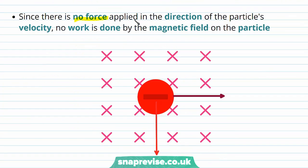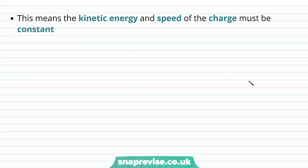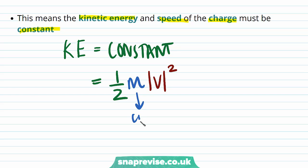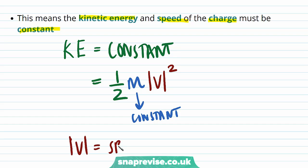Since there is no force applied in the direction of the particle's velocity, no work is done by the magnetic field on the particle. This means that the kinetic energy and speed of the charge must be constant. Our kinetic energy is constant, and since kinetic energy equals one half times mass times the magnitude of velocity squared, and mass remains constant, therefore the magnitude of velocity — the speed — must also be constant.